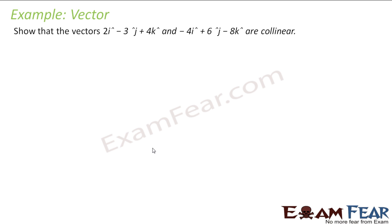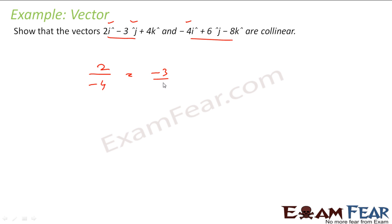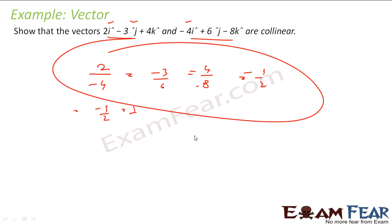Let's take one example. We have to prove that these vectors are collinear. We can prove that the ratio of the x, y, and z components are the same. The ratio of x components is 2 by minus 4. If this is equal to minus 3 by 6 for the y components, and 4 by minus 8 for the z components, then all these ratios are equal to minus 1 by 2. Thus, I can say that they are collinear.